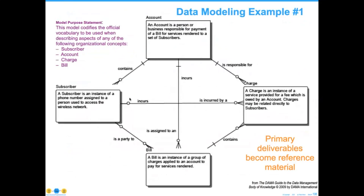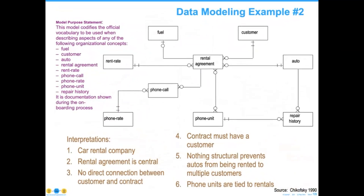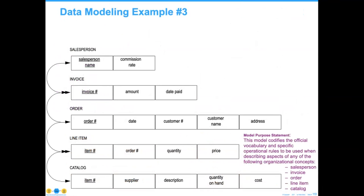I had a CIO that I worked for for many years who said, 'I don't understand your data modeling stuff, but I know that when I go to my office in Singapore and Hong Kong and Tokyo, and I see these models up on the wall, even though they don't speak English, they understand precisely what it is that we are attempting to do.' Here's a second example — a car rental company. Even if we don't know much about it, we can figure that out from the data model: the agreement is clearly central to what happens; there is no direct communication between customers and the contract; a contract must have a customer, but nothing prevents automobiles from being rented by multiple customers.